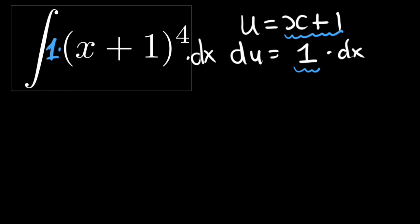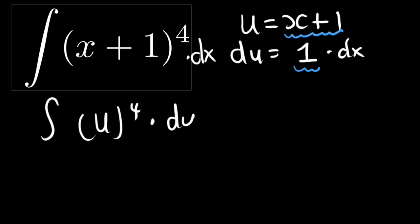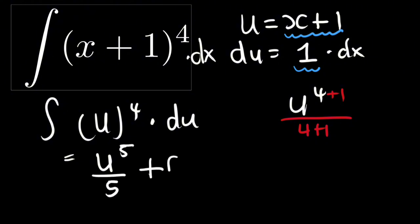We will see in the next questions how to solve when the derivative is not present or is different. Now let us substitute: we replace x plus one with u, giving us the integral of u to the power four du. Applying the power rule, we add one to the exponent and divide by the new power, four plus one.